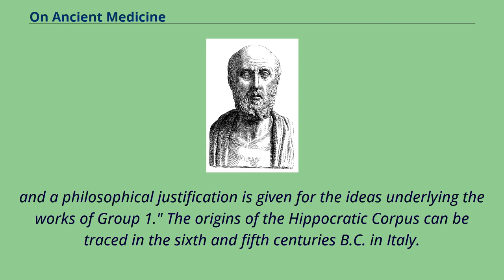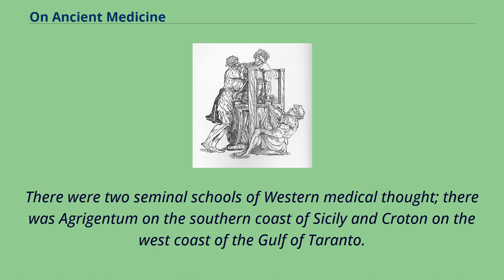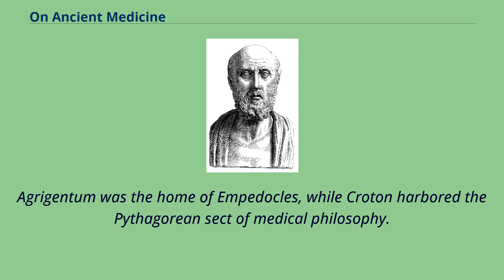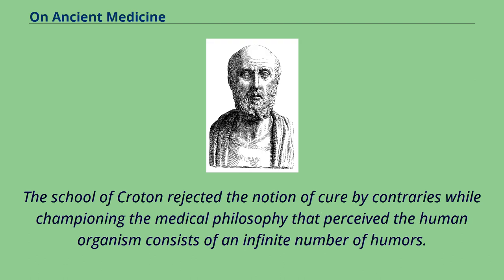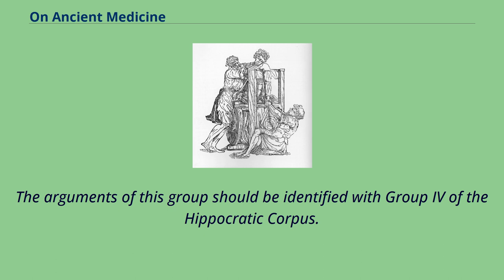The origins of the Hippocratic Corpus can be traced to the 6th and 5th centuries BC in Italy, where there were two seminal schools of Western medical thought. There was Agrigentum on the southern coast of Sicily and Croton on the west coast of the Gulf of Taranto. Agrigentum was the home of Empedocles, while Croton harbored the Pythagorean sect of medical philosophy. The school of Agrigentum placed great emphasis on cure by contraries and should be associated with Group 3, while the school of Croton rejected cure by contraries and championed the view that the human organism consists of an infinite number of humors, identifying it with Group 4.